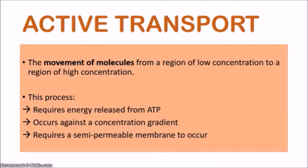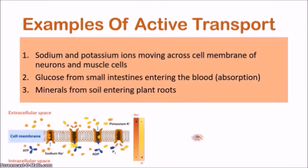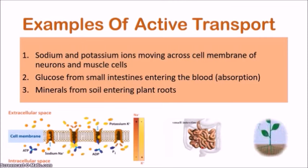Active transport allows substances and molecules to move from a region of low concentration to a region of high concentration — moving against the concentration gradient. In diffusion and osmosis, you go down the concentration gradient from high to low, but with active transport you go from low to high. Active transport also requires a semipermeable membrane to occur, since it normally takes place across cell membranes in the body.